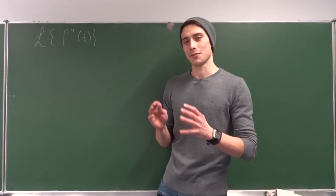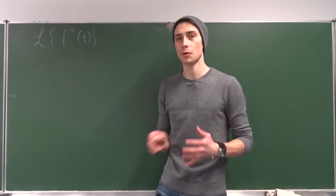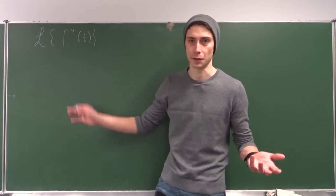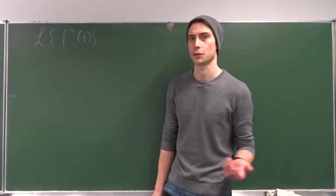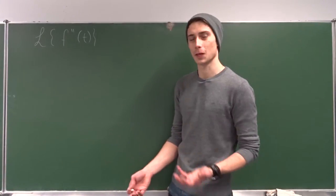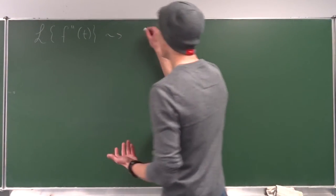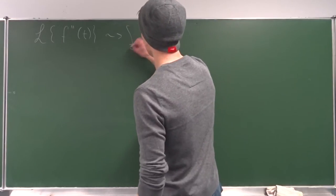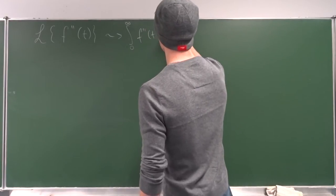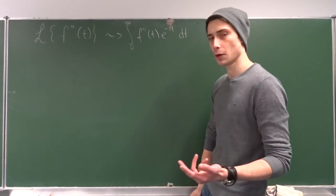We are going to dive into Laplace transforms straight away and we are going to talk about the Laplace transform of the second derivative of some time-dependent function f(t). So that's the Laplace transform of f''(t), and as always we are going to use the definition of the Laplace transform on this function. So that's the improper integral from zero to infinity of f''(t) times e to the minus st times dt.